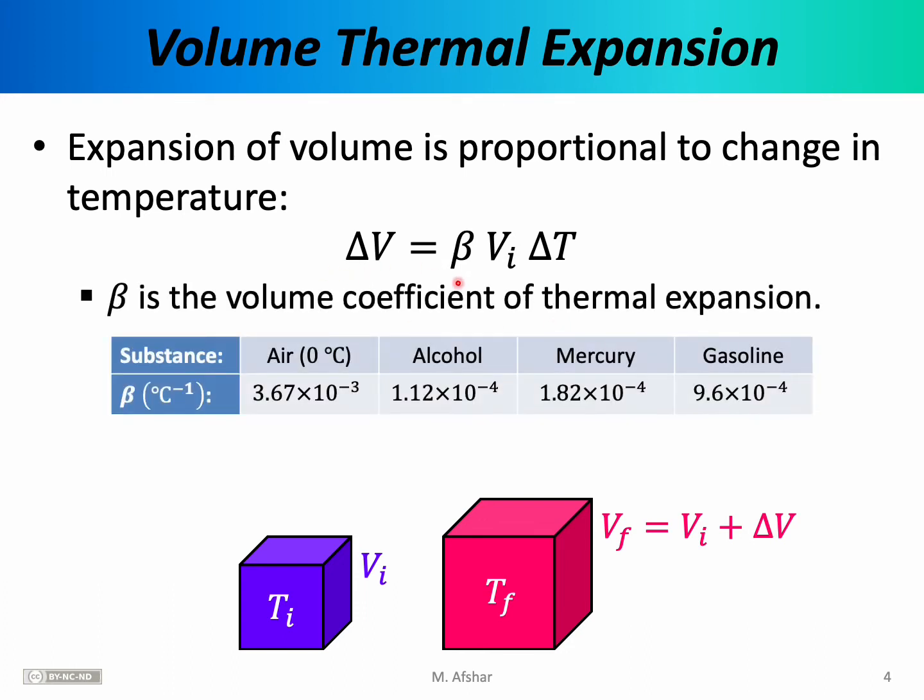The constant in front, beta, is known as the volume coefficient of thermal expansion. On the previous slide, we were talking about the length coefficient of thermal expansion. This is the three-dimensional volume coefficient.